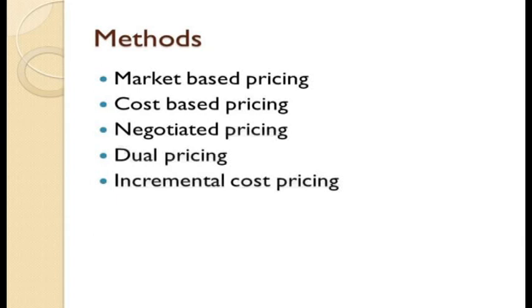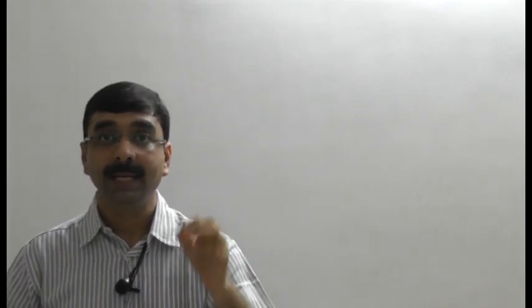Now let's discuss methods of transfer pricing. The first is market-based pricing. When a product transfers from one division to another, it is priced as per its current market value if it is offered for sale in the market. The understanding is that whatever price is running in the market is the price used for the transfer. This method resolves conflict between buying and selling divisions, equally satisfying and benefiting both. It also saves administrative cost.